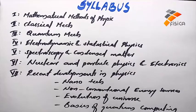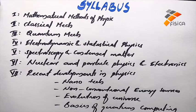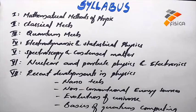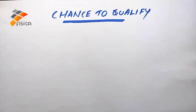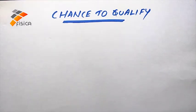You must give equal weightage to the first six modules. For the seventh module, a general reading of topics like nanotechnology, non-conventional energy sources, and the evolution of the universe is sufficient to solve problems. So give primary importance to the first six modules.